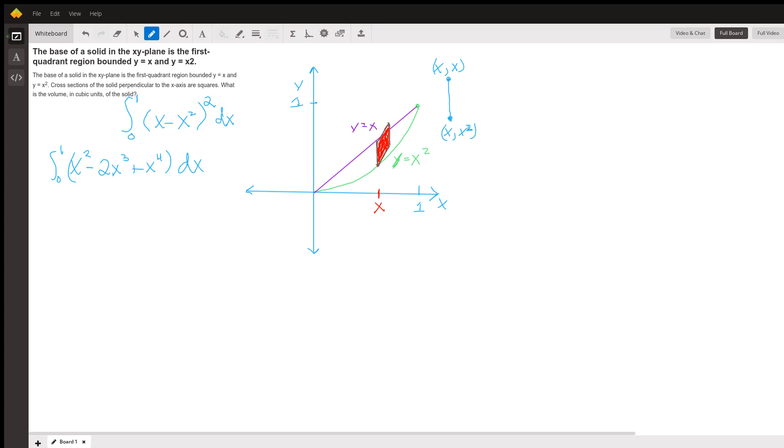So when we do the integral, this is just a regular series of integrals. The integral of x squared dx is x cubed over 3. Let me get that looking a little better. x cubed over 3. The integral of negative 2x cubed is negative 2x to the fourth over 4, which is negative x to the fourth over 2. And the integral of x to the fourth dx is x to the 5 over 5.